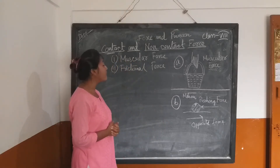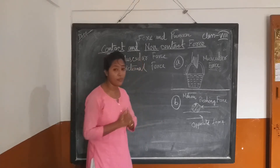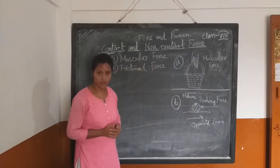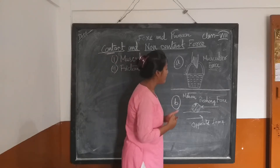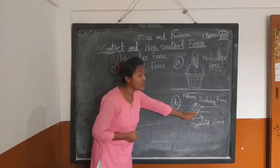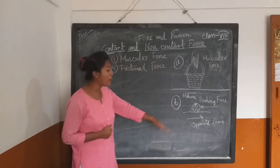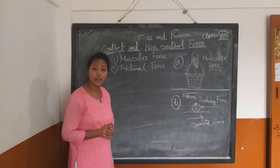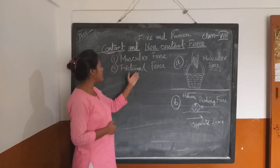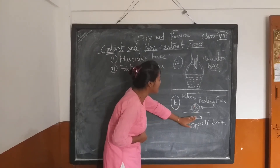Now let's talk about frictional force. For example, I have a ball and I am pushing it on the ground. Whenever I push it, the ball is in direct contact with the ground, and the ground will exert another force which is opposite to the motion of the ball — this is called frictional force. So frictional force is also a contact force because the ball is directly in contact with the ground.